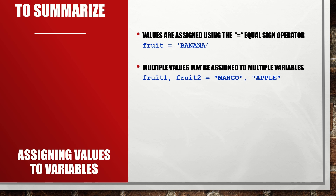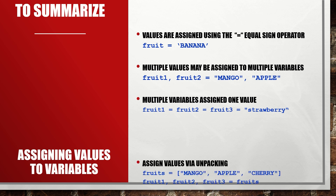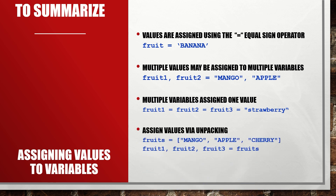So 'mango' is stored in 'fruit1' and 'apple' is stored in 'fruit2' respectively. We can also have multiple variables assigned one value — in this case, three variables 'fruit1', 'fruit2', and 'fruit3' will all have the same value 'strawberry'. We can also assign values by unpacking a collection, like a list, which results in 'mango' stored in 'fruit1', 'apple' in 'fruit2', and 'cherry' in 'fruit3'.